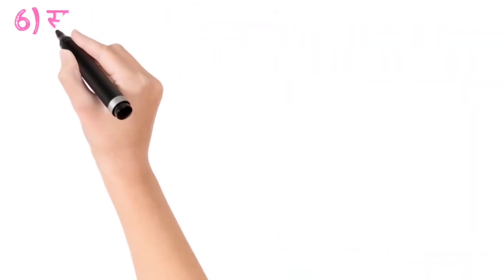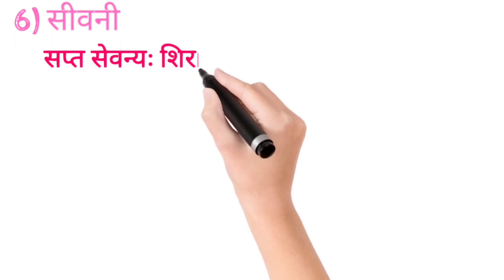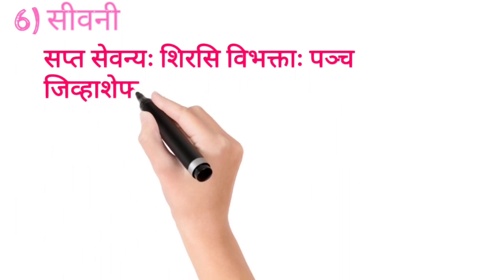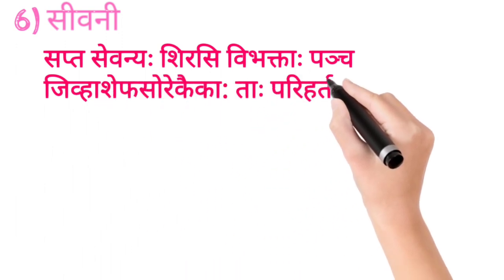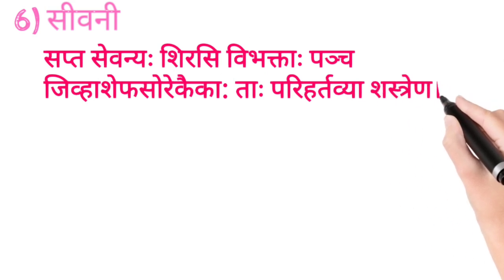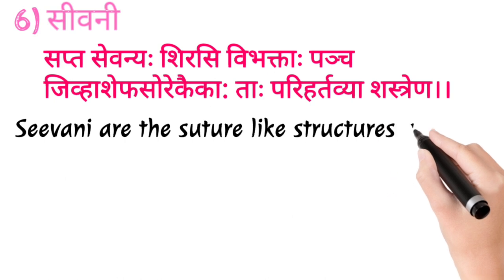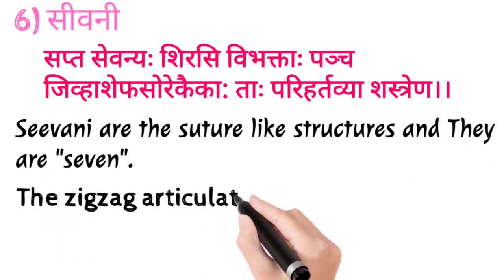Ab Seevani ko detail mein describe karte hain. Sapt Seevani hai Shirsi, Vibhakta, Panch, Jiva Sheef, Soar, Ek ai kaha taha, Parihartavya, Shastrena. Seevani is a suture-like structure and they are 7 in number. Parihartavya Shastrena matlab hamen inki kisi bhi shastra se raksha karni chahiye.